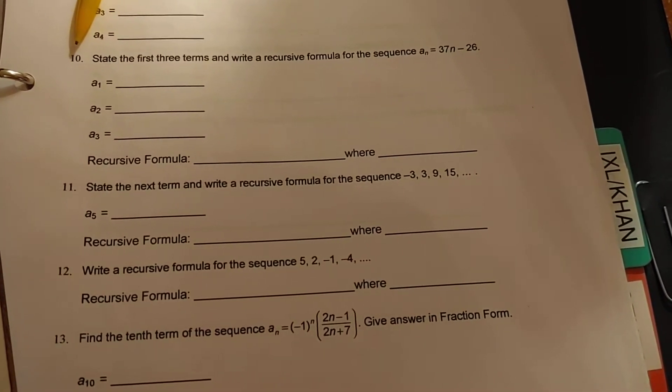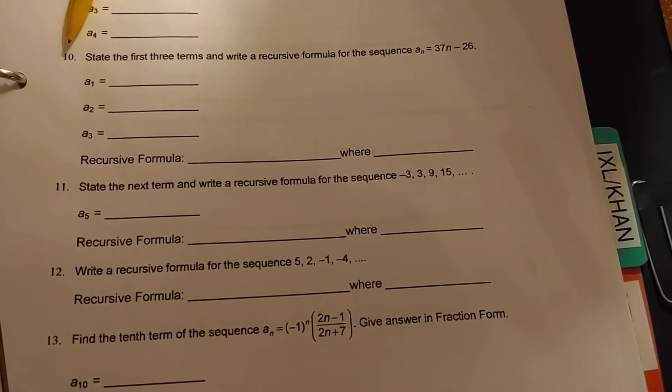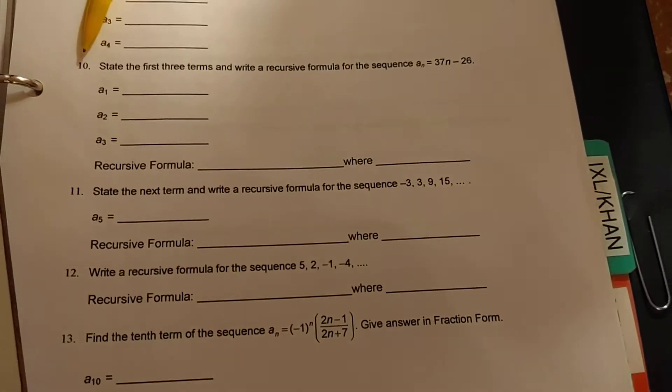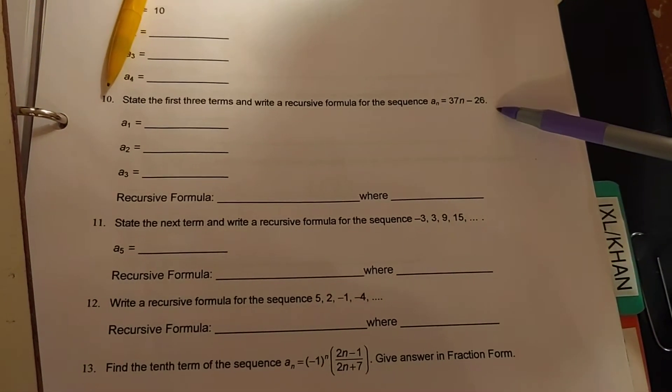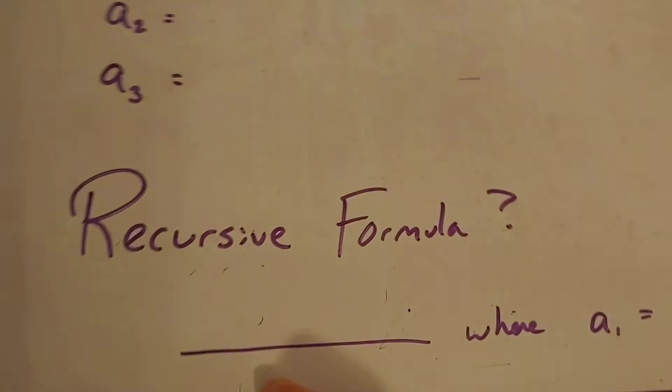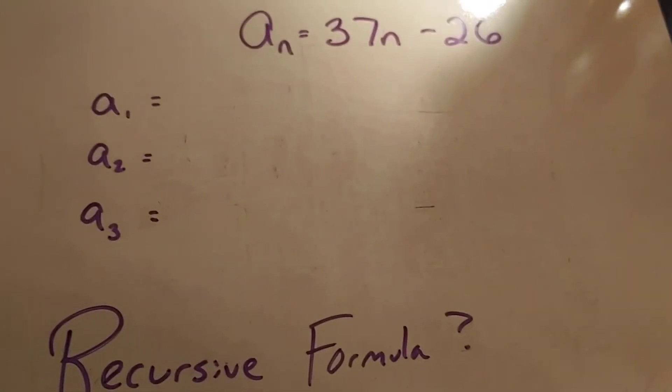So number 10 wants us to state the first three terms and write a recursive formula for the sequence, given that formula, which is an explicit formula, a_n = 37n - 26. Alright, so let's take a quick look at this problem here.